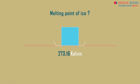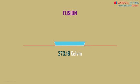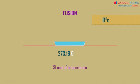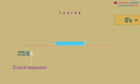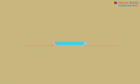This process of solid changing to liquid is called fusion. Kelvin is the SI unit of temperature, and 0 degrees Celsius is 273.16 Kelvin. We will come to this point again.